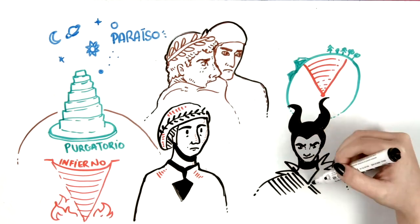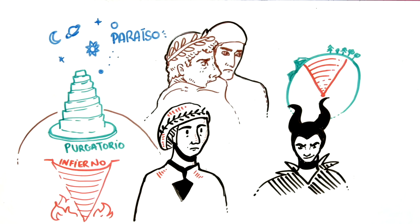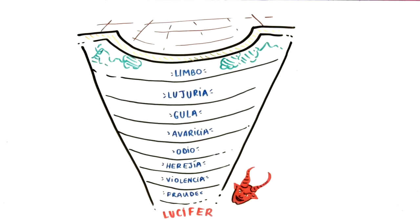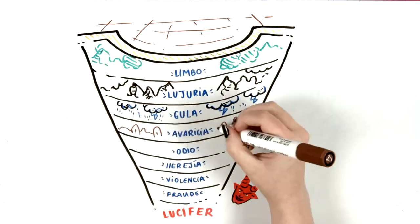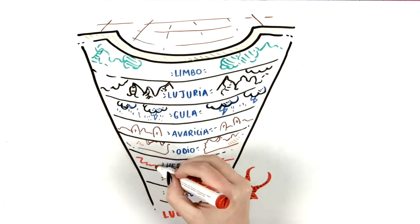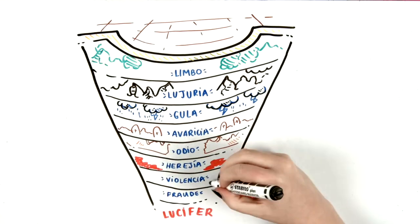In each part there are people with a different degree of sin. Hell is shaped like a funnel divided into nine diminishing circles. It's gloomy and horrible. The smell is foul and the sensations are very unpleasant. In it there are cemeteries, wells, cliffs, and swamps.